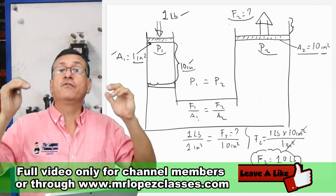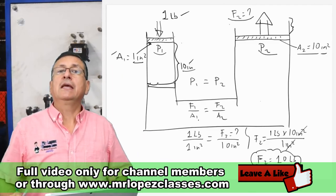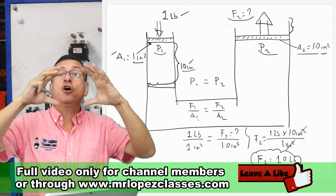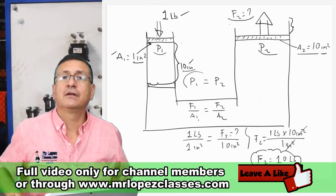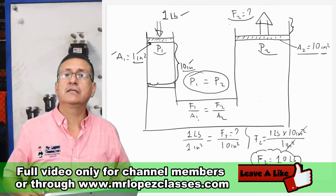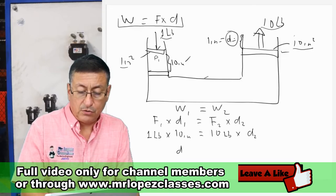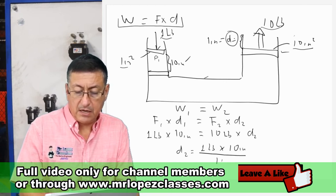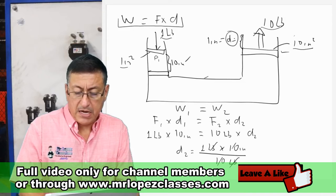To calculate the output force we used the constant pressure concept. Now, using the concept of work — which is also constant — the distance number two equals one pound times 10 inches, divided by 10 pounds. Pounds cancel and 10 cancels, so the distance number two is one inch.